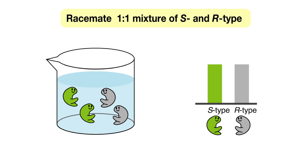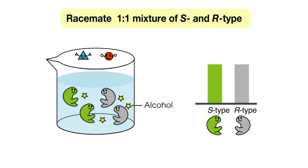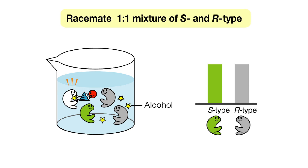This is a schematic diagram of the reaction process. The racemate and an alcohol are placed in a vessel, to which is added the catalyst and a coupling agent. The S-type isomers couple with the alcohol, reducing the quantity of S-type.